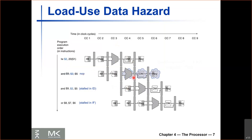A NOP is an operation that doesn't do anything — it's a bubble. By stalling the AND instruction in the ID stage for both cycle three and cycle four, when we get to cycle five and the AND instruction needs register 2, now register 2 is available because we've finished the data memory stage of the load instruction. We can then forward register 2 from the beginning of the write back stage of the load instruction to the beginning of the execute stage of the AND instruction. This is how we stall the pipeline whenever we have a load-use data hazard.